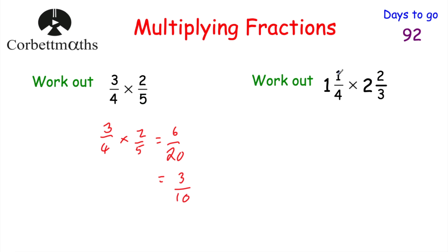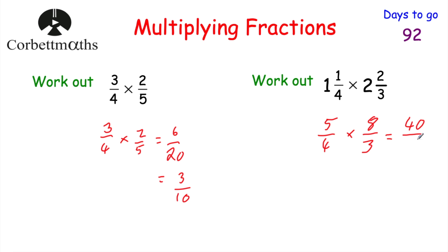Now we've got to work out 1 and a quarter multiplied by 2 and 2 thirds. Let's make these top-heavy fractions to begin with. 1 times 4 is equal to 4, plus 1 is equal to 5, so that's 5 quarters. And then 2 and 2 thirds — 2 times 3 is equal to 6, plus 2 is equal to 8, so it's going to be 8 thirds. So we've got 5 quarters multiplied by 8 thirds. Multiplying the numerators and denominators: 5 times 8 is equal to 40, and 4 times 3 is equal to 12. So we've got 40 twelfths.